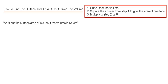So let's have a look at the example here. We've got to work out the surface area of a cube if the volume is 64 cm³. Step one then, we need to cube root the volume to give us the side length of the cube. So the cube root of 64 is 4 cm, because 4 times 4 times 4 is 64.